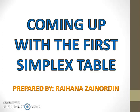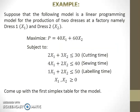Coming up with the first simplex table. Let's consider this example. Suppose that the following model is a linear programming model for the production of two dresses at a factory, namely dress 1 and dress 2. Come up with the first simplex table for the model.